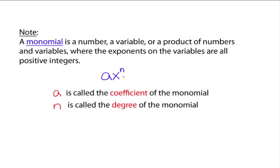The 'n' — the exponent on the variable — is called the degree of the monomial. Every monomial is going to have a degree associated with it as well. It's very important we understand the words coefficient and degree.